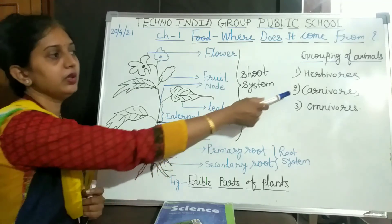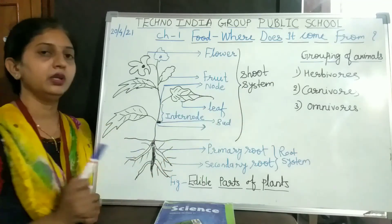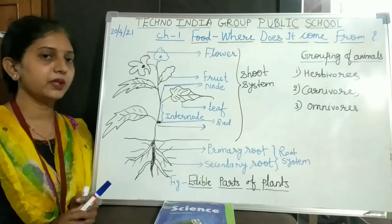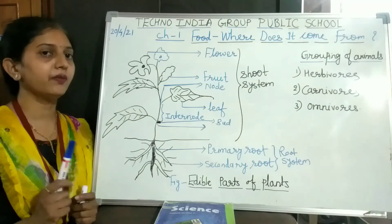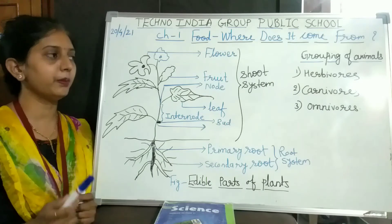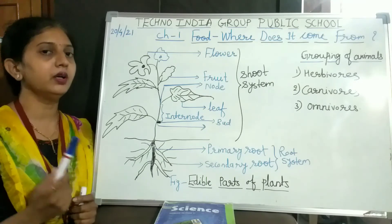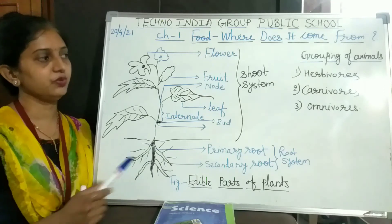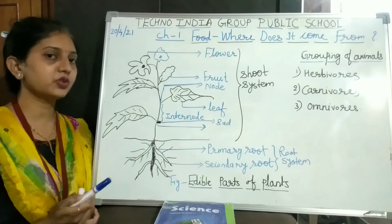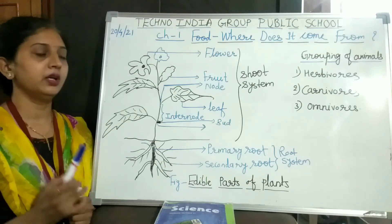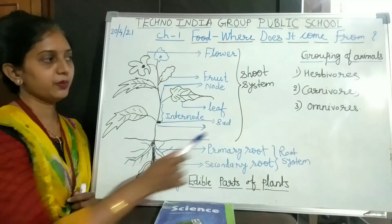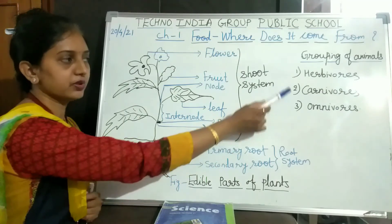Next are carnivores. Carnivores are those animals which eat only the flesh of other animals, or they depend completely on other animals for food. Examples of carnivores are lion and tiger.